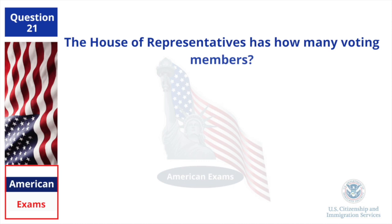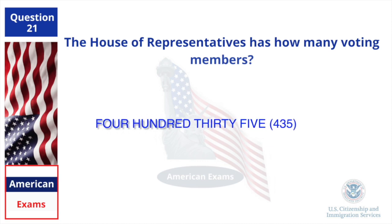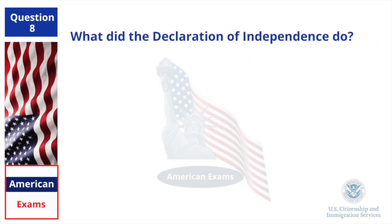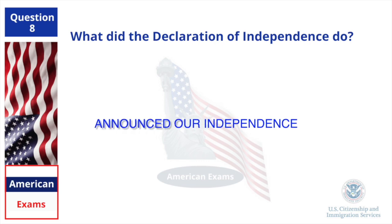The House of Representatives has how many voting members? 435. What did the Declaration of Independence do? Announced our independence.